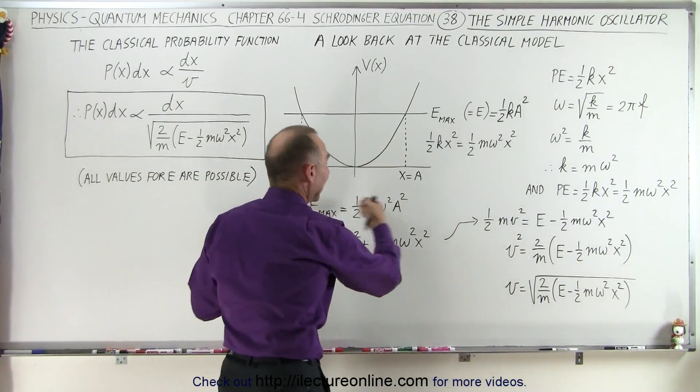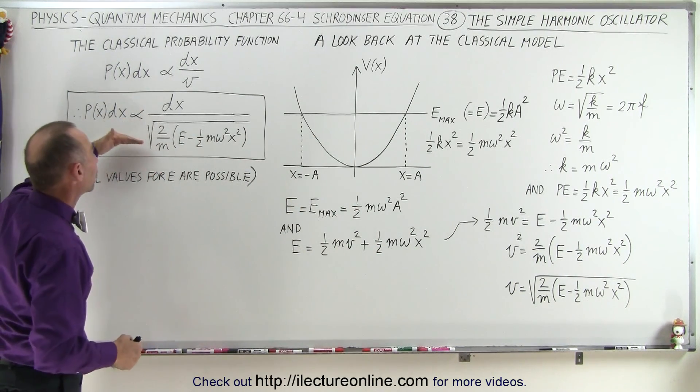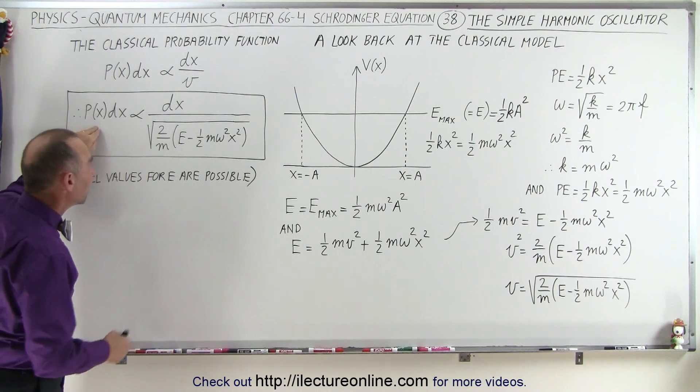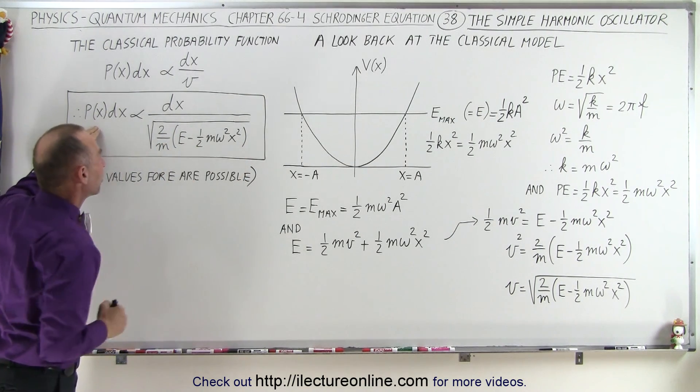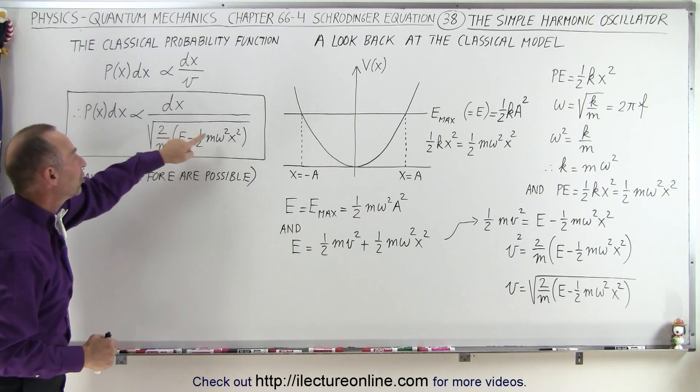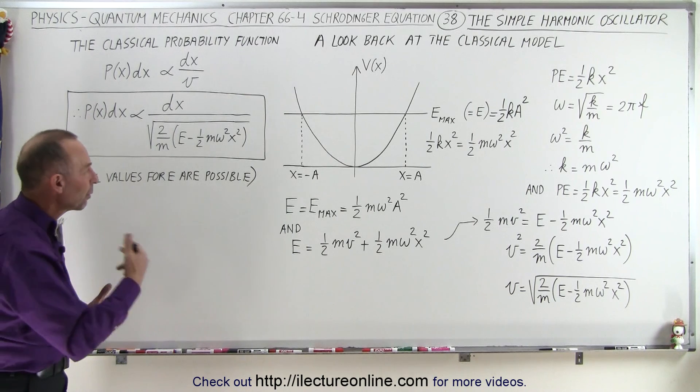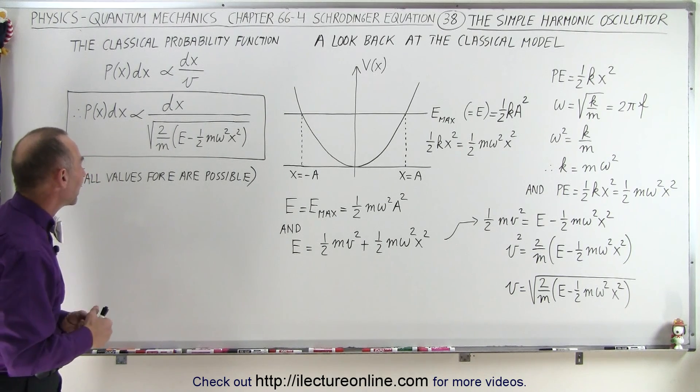I can then say that this is a good representation of the proportionality between the probability of finding a particle of an oscillator and the equation in terms of its mass, its energy, and its angle of frequency, and its position. So, we're going to need that when we look at it from a more quantum mechanic perspective.